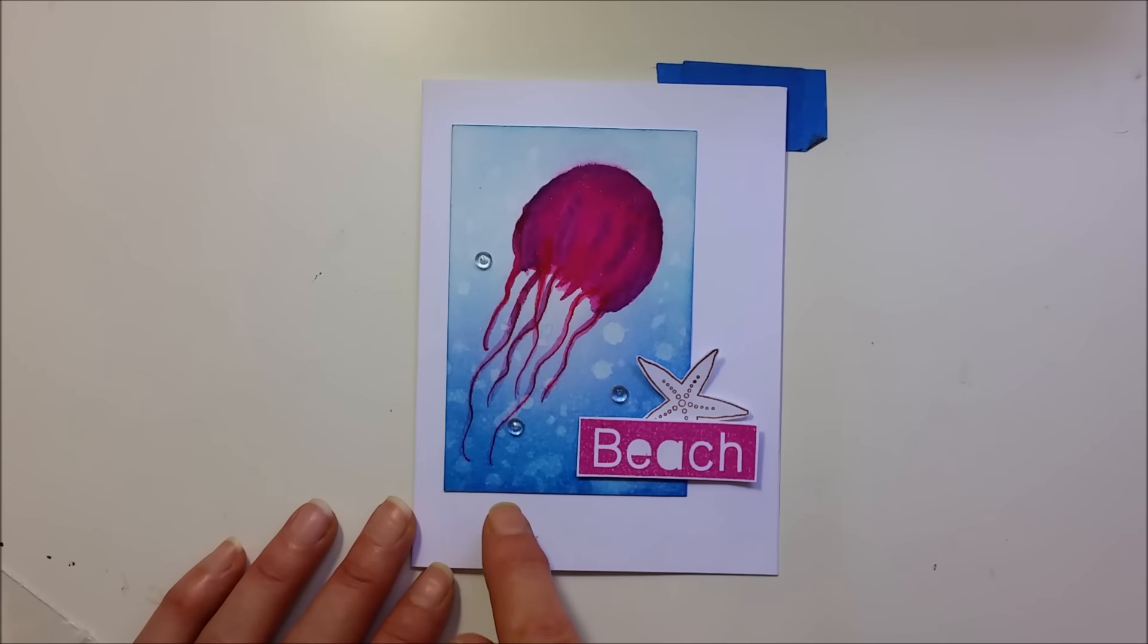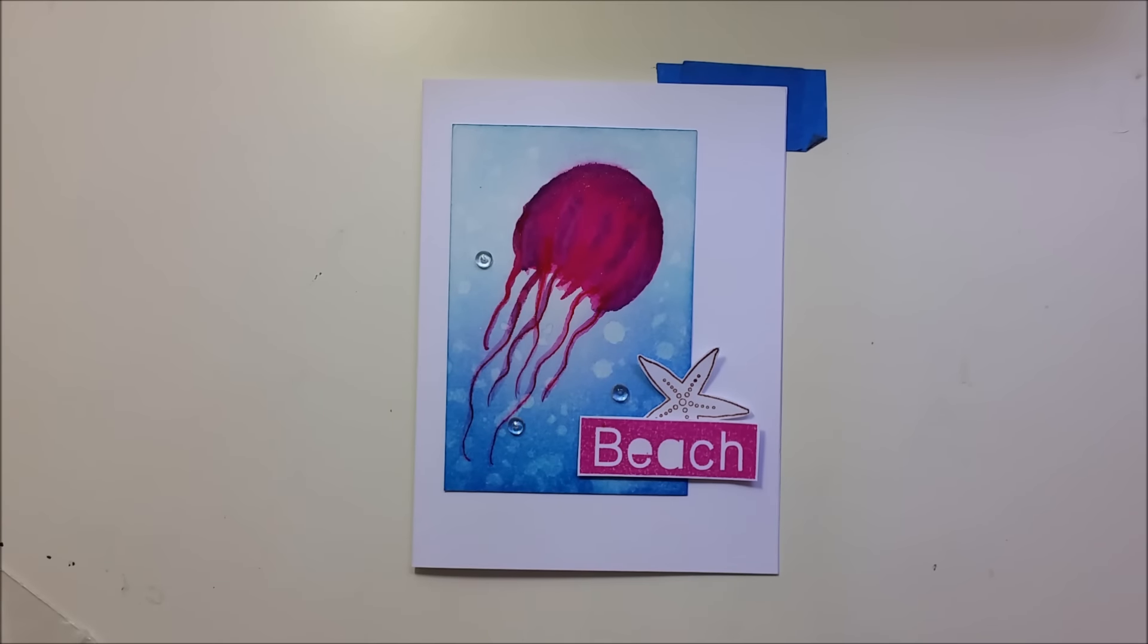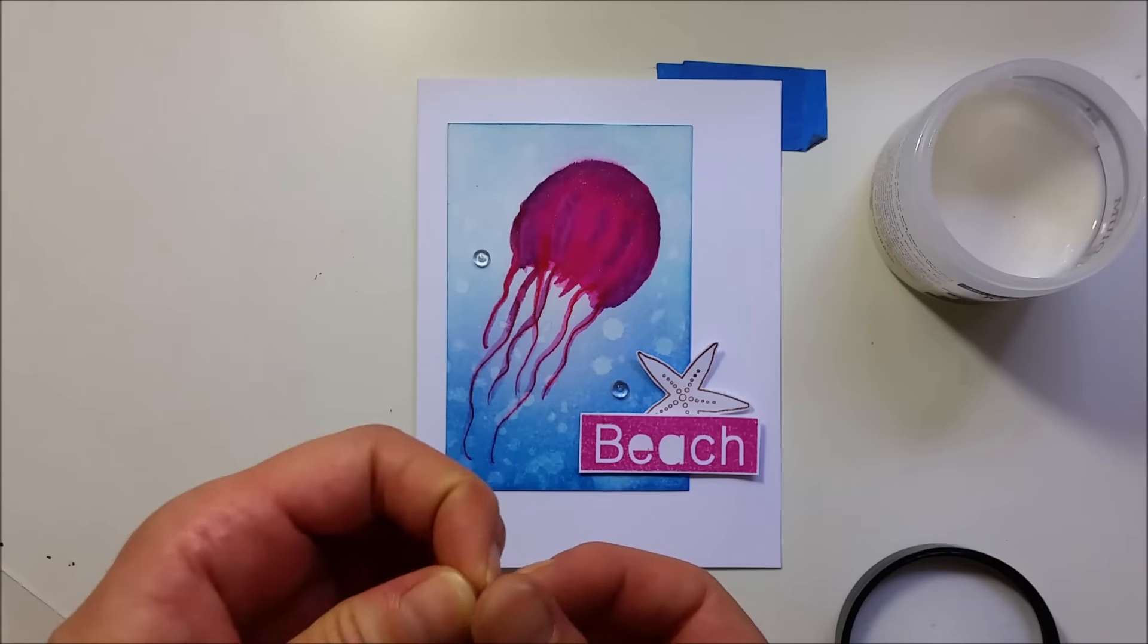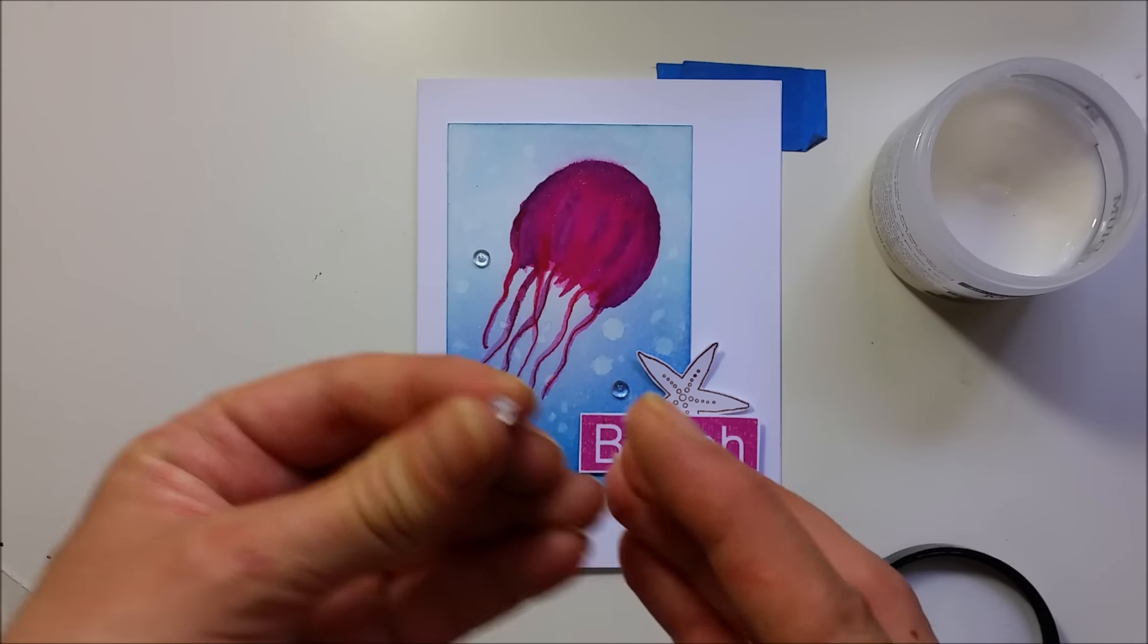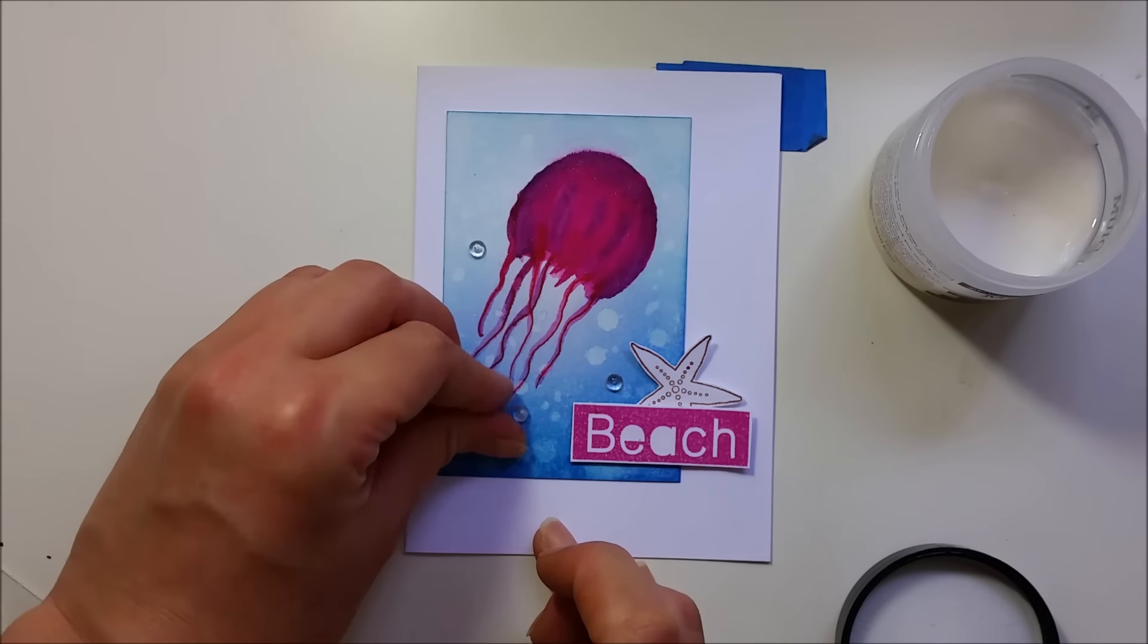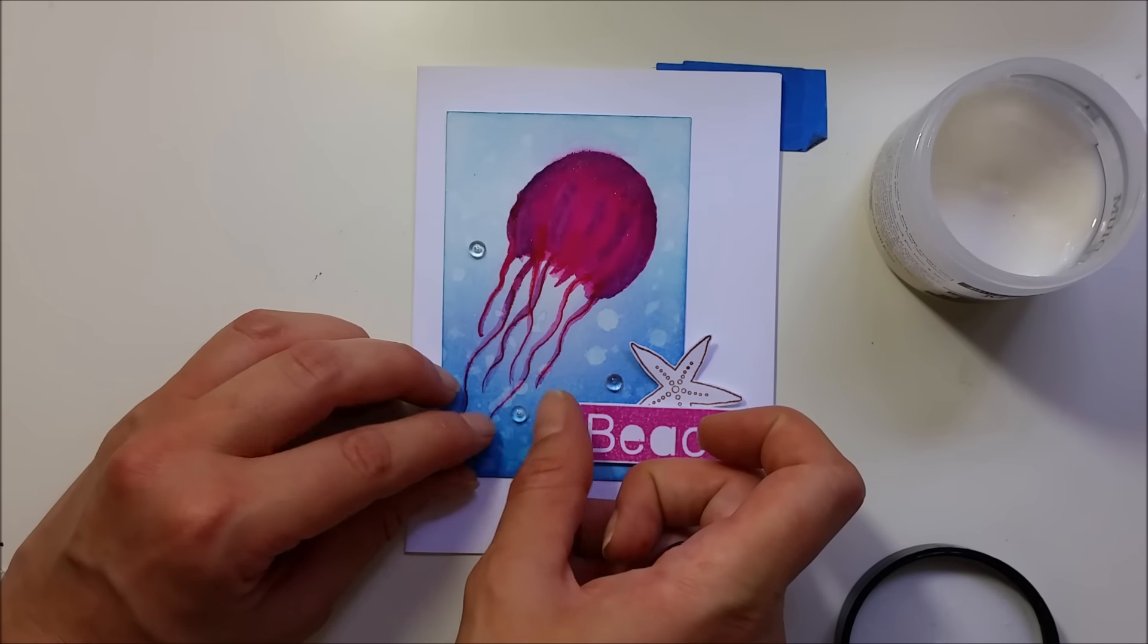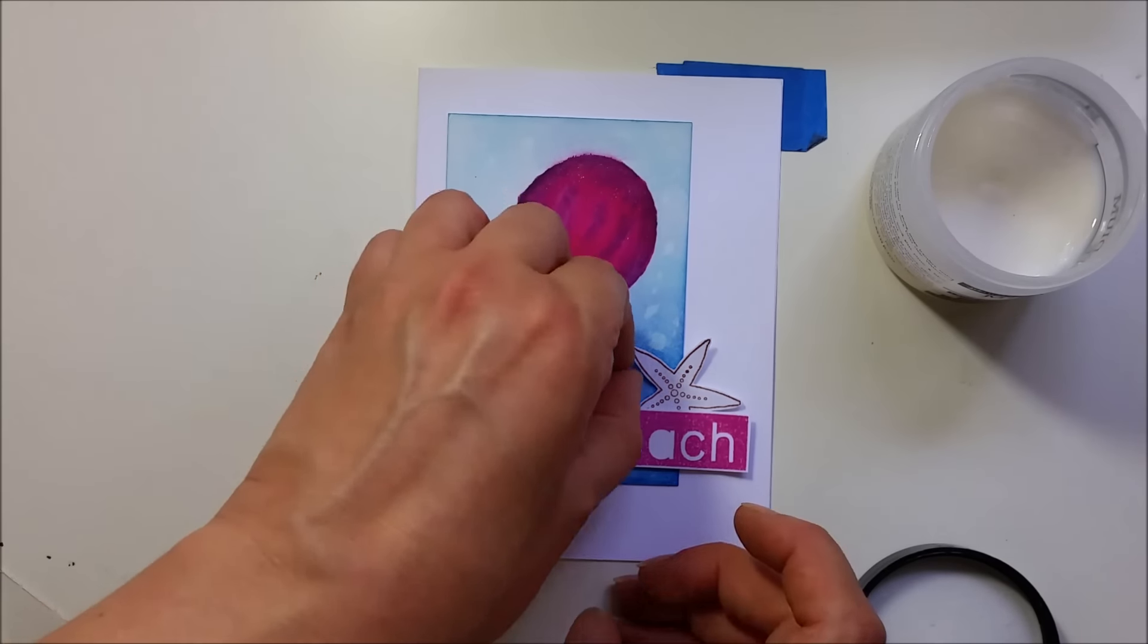And I'll be adding several of these clear droplets from Pretty Pink Posh just to give that impression of bubbles. And I am adhering these down with Multi-Medium Matte. And this will dry clear even if it looks a bit milky at first.